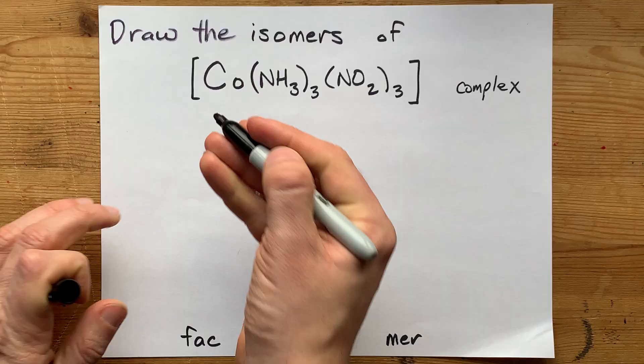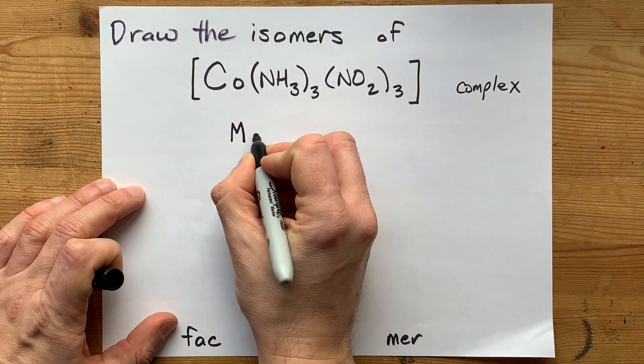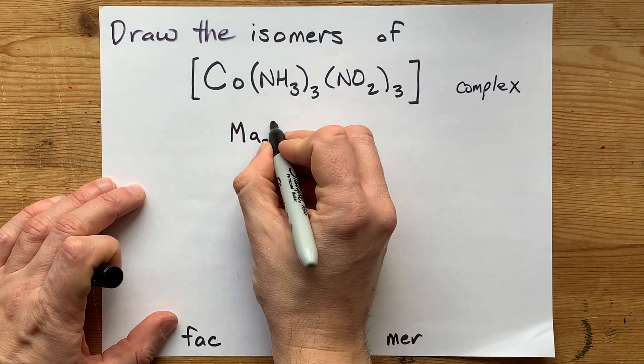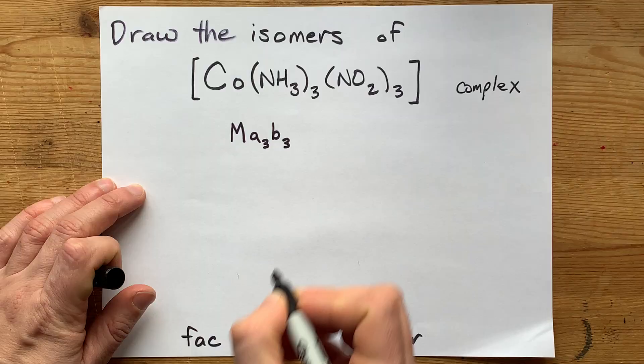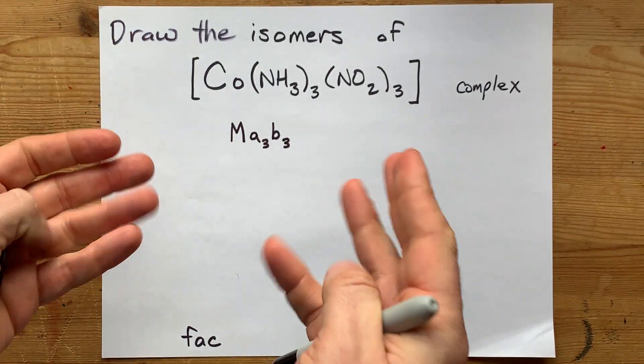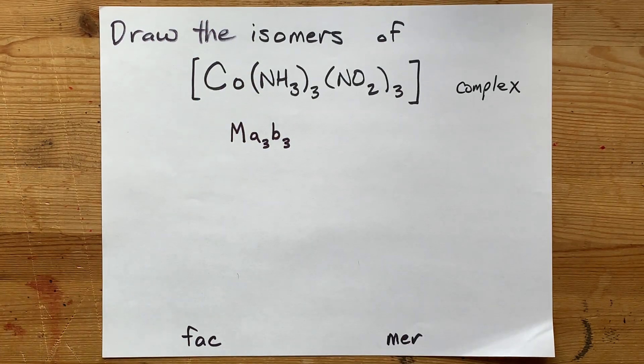When you have a metal and three of one particular ligand hanging off of it, and three of another ligand hanging off of it, there's only two possible isomers or arrangements of those ligands that are distinct from one another.